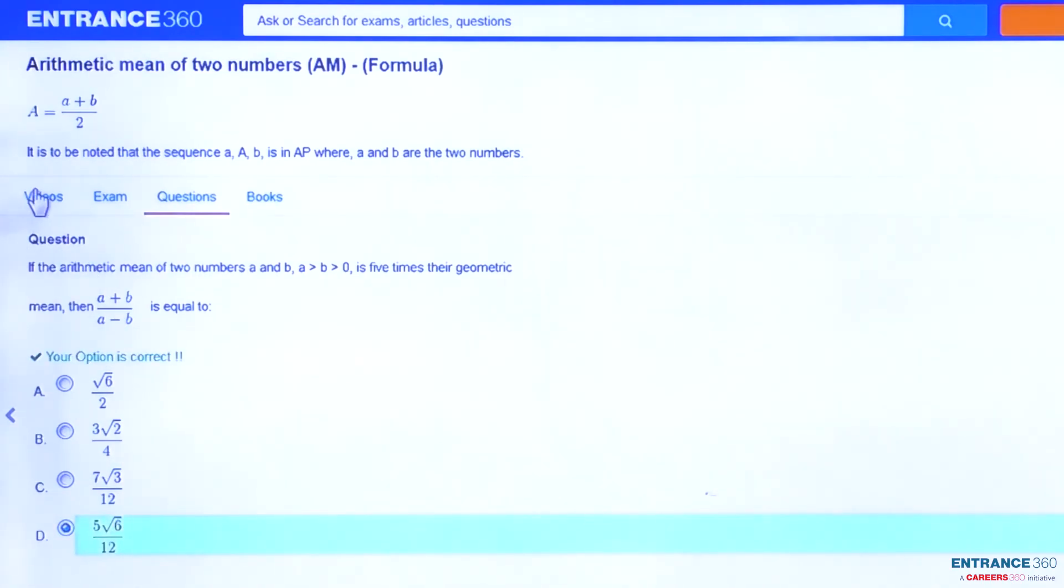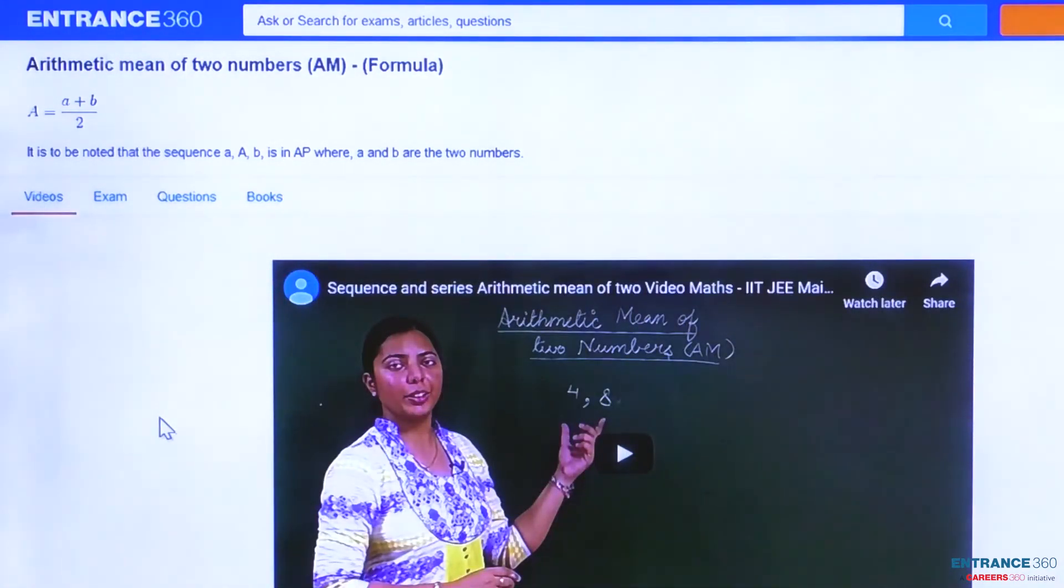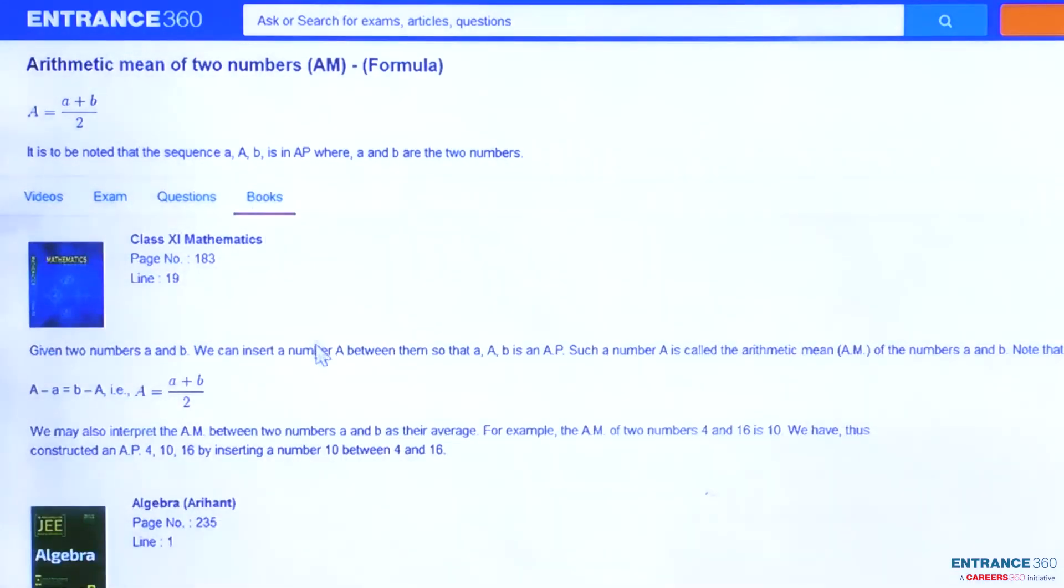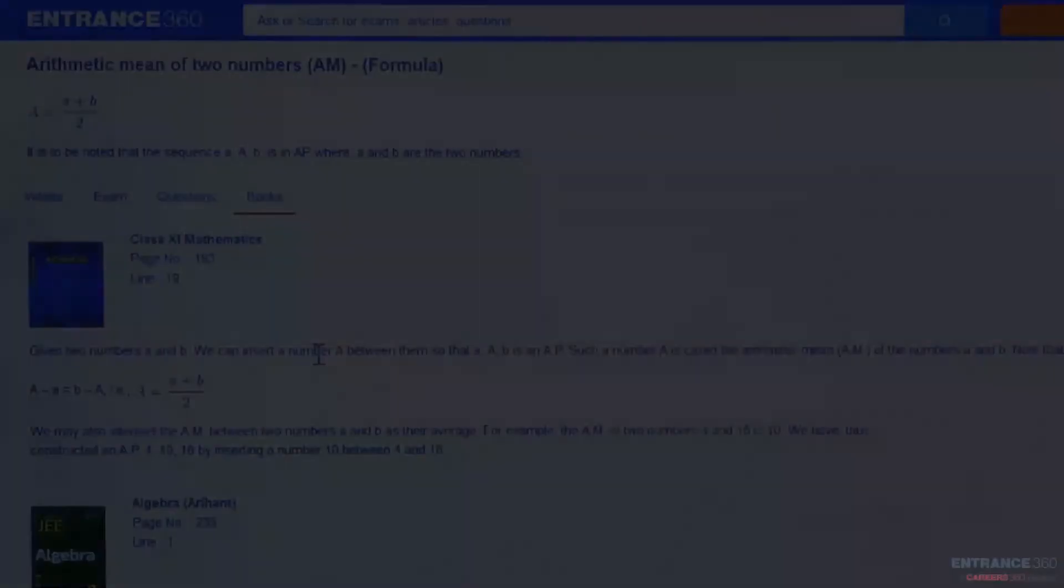You can also watch a short video on arithmetic mean of two numbers, and you can also get this concept which we used in solving our question in NCERT Class 11th Mathematics book on page number 183, line number 19. You can also get this concept in Arihant book. Thank you.